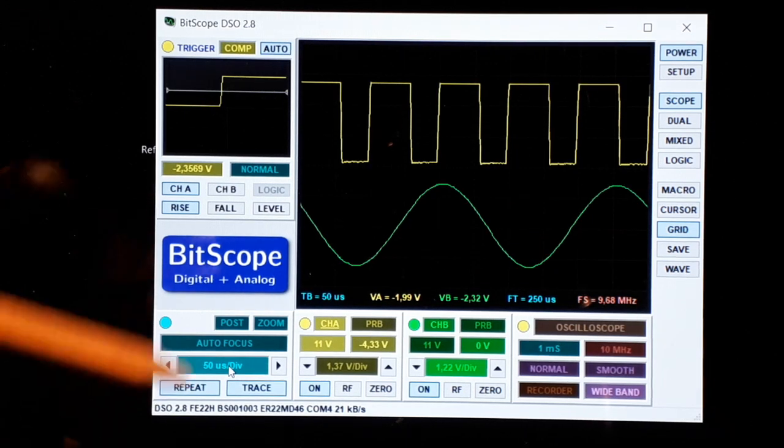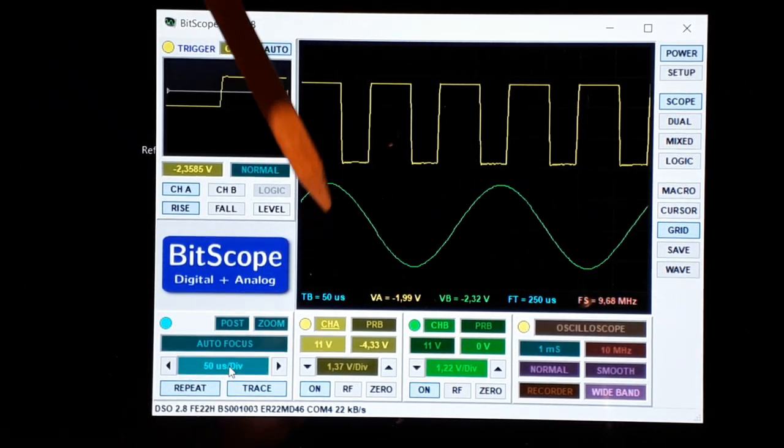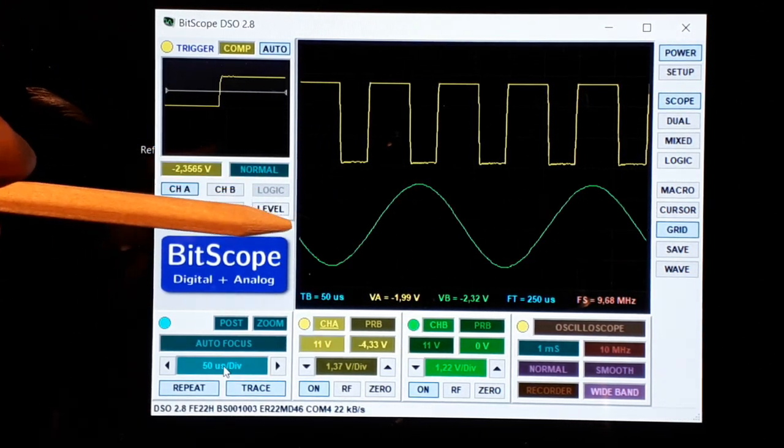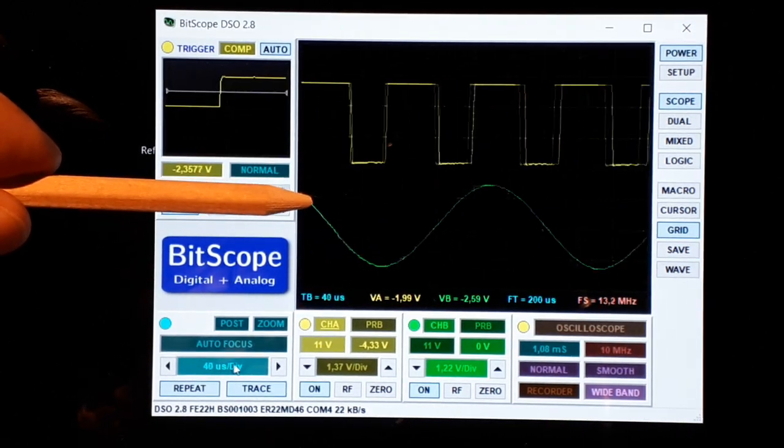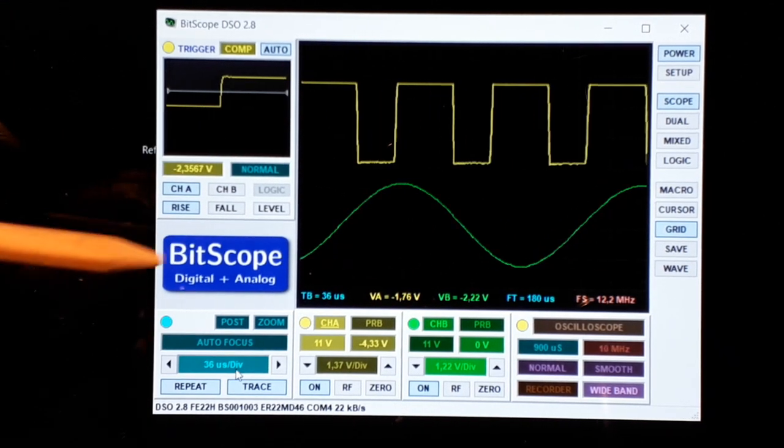Also you have the time base here. This is the distance between one vertical line and the other. In this case it's 50 microseconds per division, so you could increase or decrease the distance in the grid.